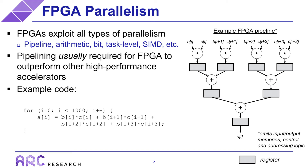I'll explain FPGA pipelining using a simple example. Here we have a simple loop that does some DSP-like operations where we are multiplying pairs of values from two different arrays, adding the products, and then storing the result in a new array. The figure on the right shows a simple FPGA pipeline for this code, which consists of four multipliers, three adders, and some registers that create multiple pipeline stages. The I/O is not shown, but inputs could come from other circuits within the FPGA, embedded memory, off-chip memory, PCI Express, or even a network.